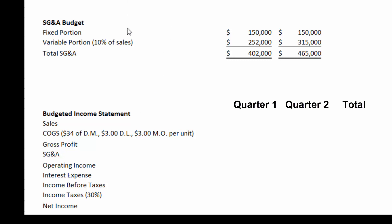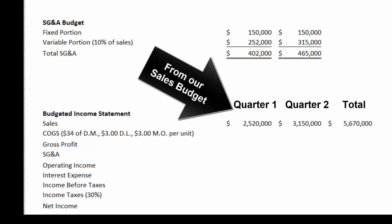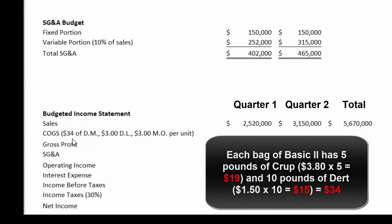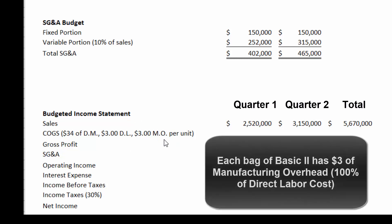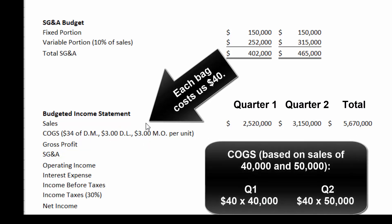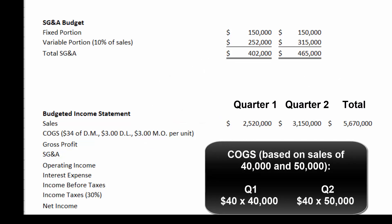Now we can create the budgeted income statement — the whole point of this exercise. We know our sales: 40,000 bags times $63 and 50,000 bags times $63, pulled from the sales budget. For cost of goods sold, each bag has five pounds of crop at $3.80 a pound — that's $19 — plus 10 pounds of dirt at $1.50 a pound — that's $15 — so $34 of direct materials. Each bag includes 0.25 hours at $12 an hour, which is $3 of direct labor, and overhead equals the labor cost — another $3. So each bag costs $34 + $3 + $3 = $40. We take $40 times 40,000 and $40 times 50,000 to get our cost of goods sold.